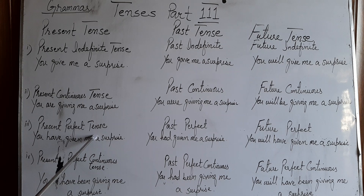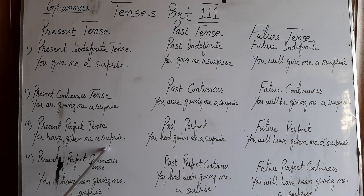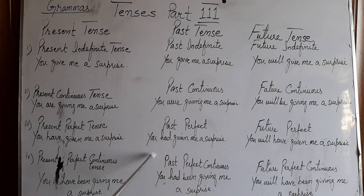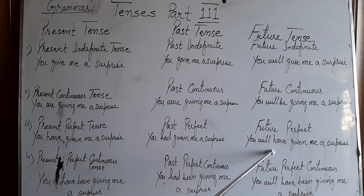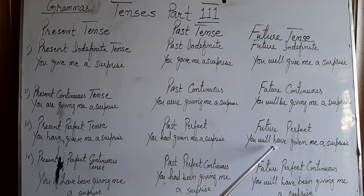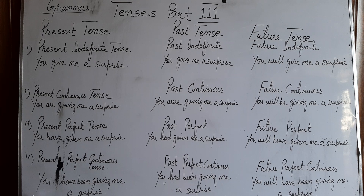Present perfect tense — کوئی کام ابھی ابھی مکمل ہو چکا ہے: you have given me a surprise. Past perfect: you had given me a surprise. Future perfect: you will have given me a surprise — future میں کہیں کوئی کام ہو چکا ہوگا۔ Present perfect continuous — have been, has been, and ing with verb: you have been giving me a surprise.